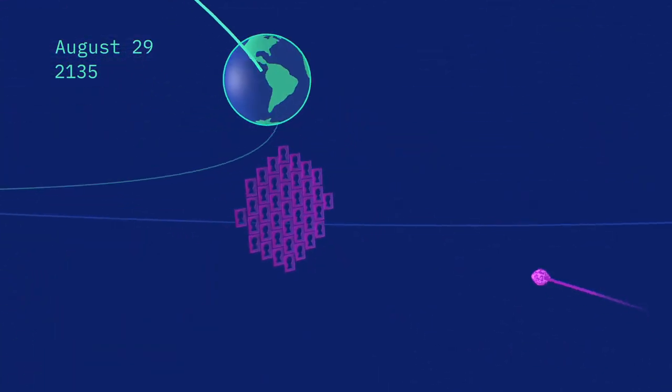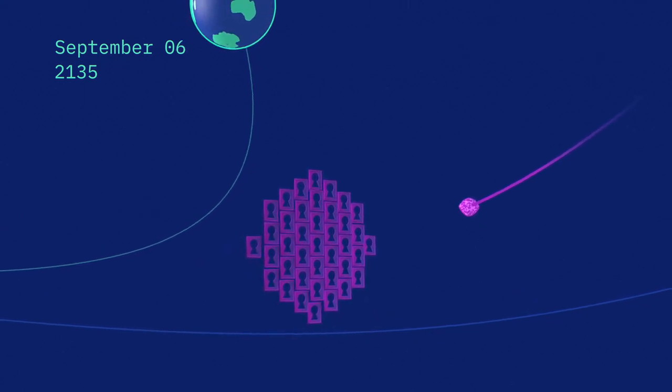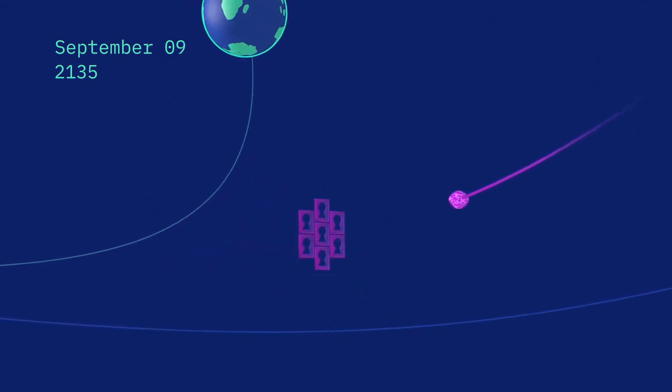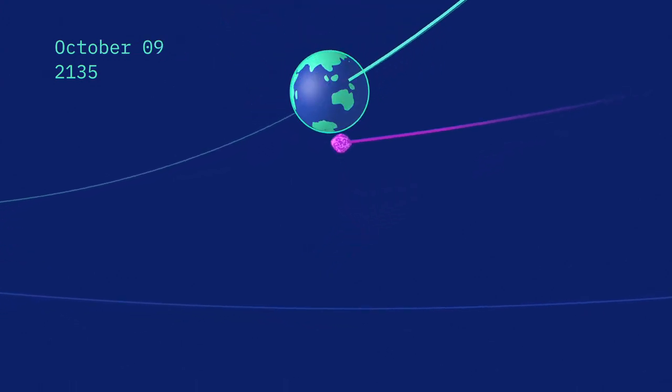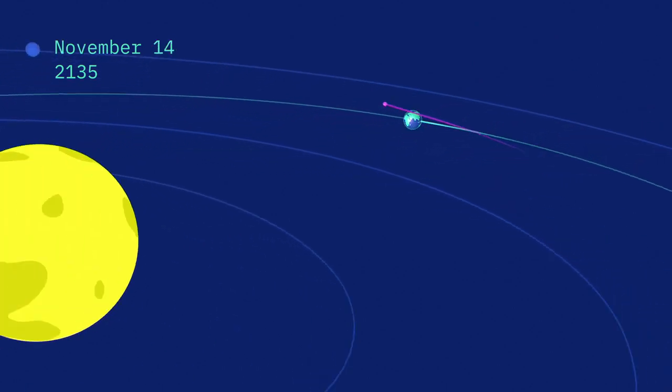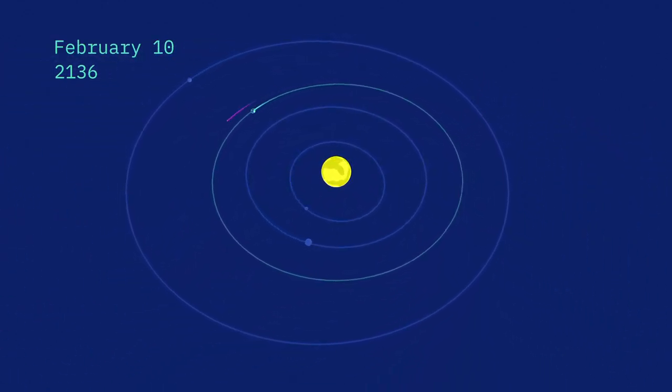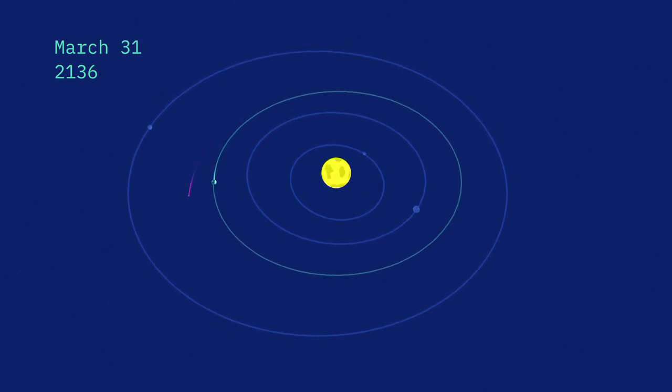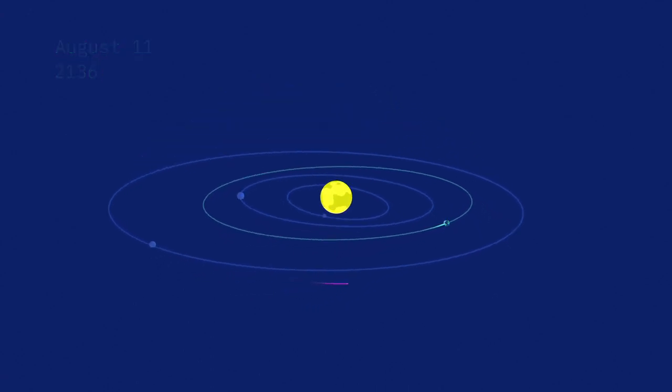The new data allowed scientists to significantly reduce uncertainties in Bennu's predicted orbit, ruling out a number of keyholes for the 2135 flyby and eliminating several future impact scenarios. While Bennu remains a hazardous asteroid, we can now make better models of its orbital evolution thanks to OSIRIS-REx. This will allow us and our descendants to better calculate Bennu's risk in the decades and centuries to come.